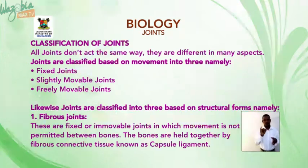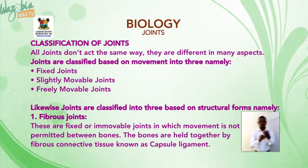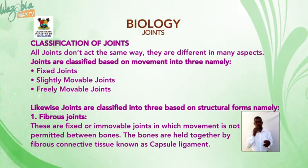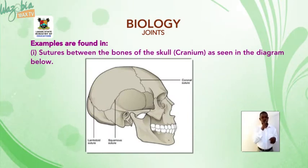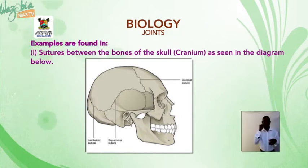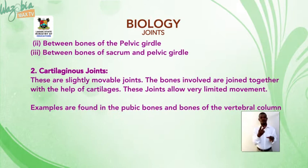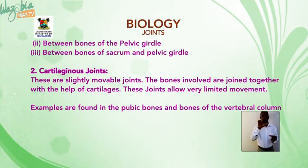Fibrous joints are fixed or immovable joints in which movement is not permitted between bones. The bones are held together by fibrous connective tissue known as capsule ligaments. Examples are found in: sutures between the bones of the skull (cranial), between bones of the pelvic girdle, and between bones of the sacrum and pelvic girdle.